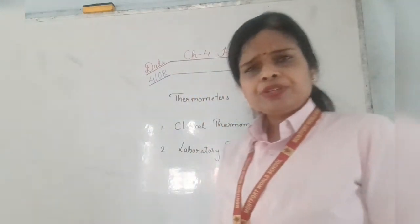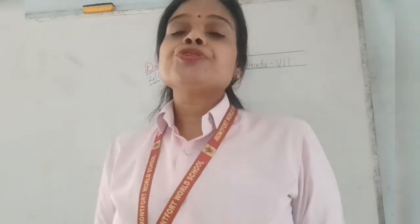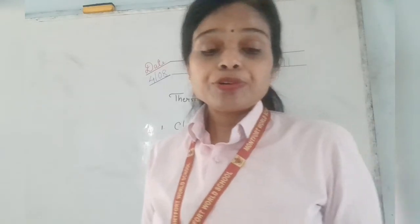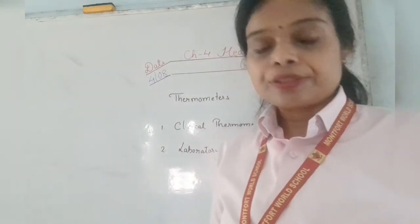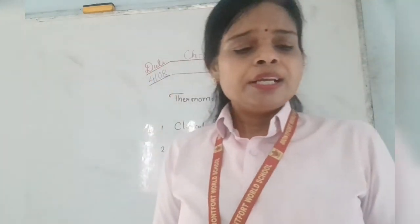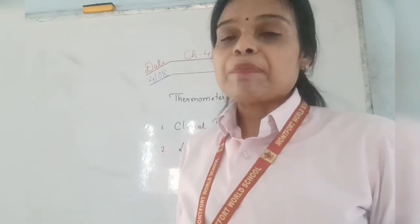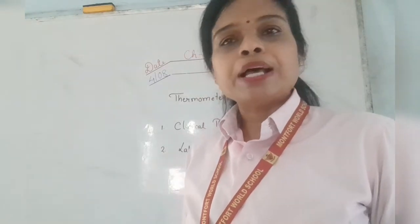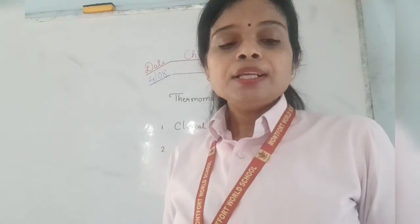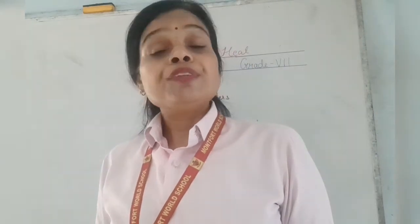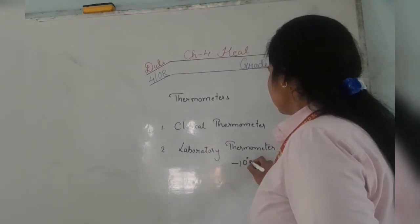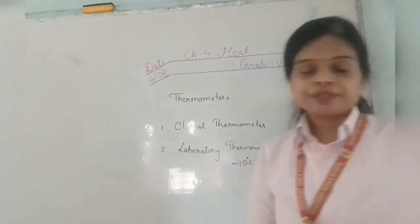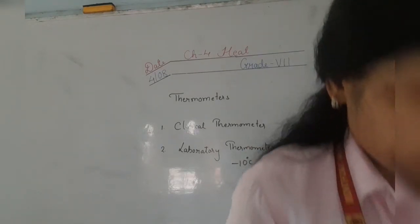The laboratory thermometer is used in labs to do experiments, measuring the temperature of objects other than the human body. It contains a thick-walled, fine-bored glass capillary tube with a small bulb filled with mercury. The temperature range of the laboratory thermometer is between minus 10 degrees to 110 degrees centigrade.